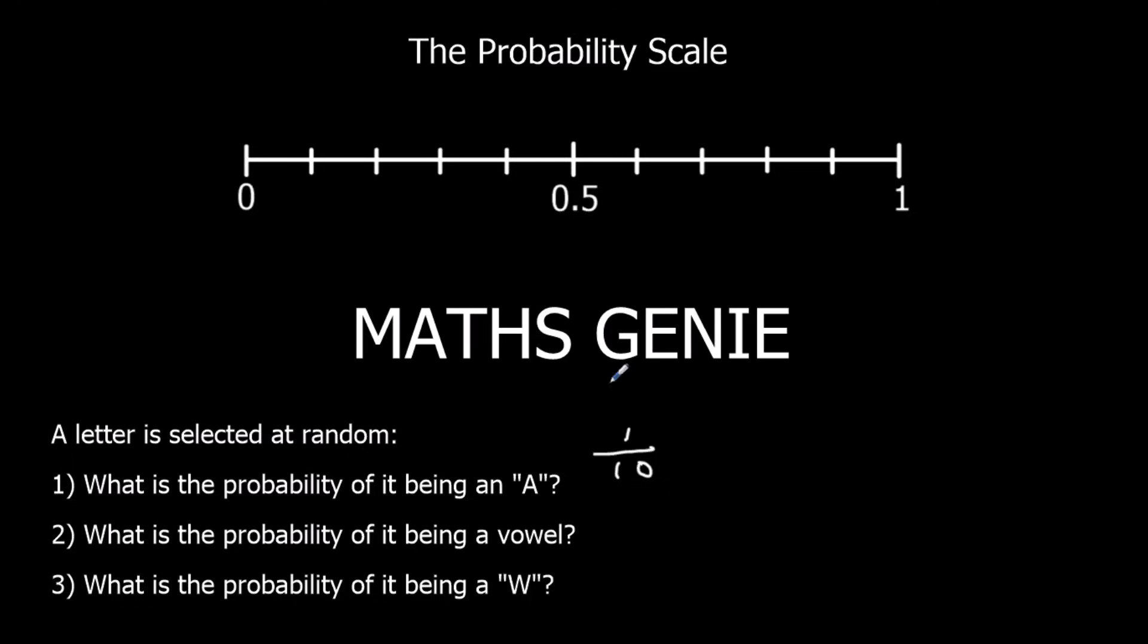If I'm going to mark this on the probability scale up here, this is 50%, that's 5 out of 10. 4 out of 10, 3 out of 10, 2 out of 10, this is 1 out of 10 over here. So that's the probability of getting an A.